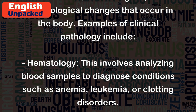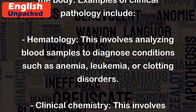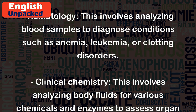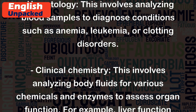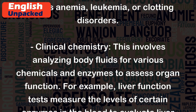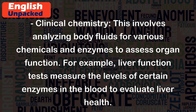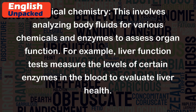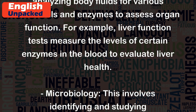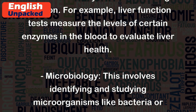Examples of clinical pathology include hematology, which involves analyzing blood samples to diagnose conditions such as anemia, leukemia, or clotting disorders. Clinical chemistry involves analyzing body fluids for various chemicals and enzymes to assess organ function. For example, liver function tests measure the levels of certain enzymes in the blood to evaluate liver health.